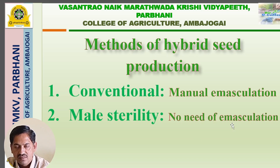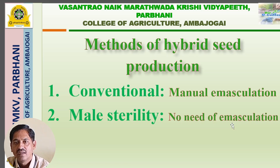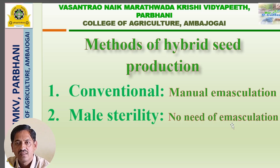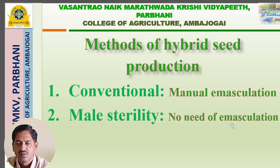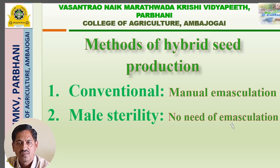Why is emasculation required? Because one line will be used as a female parent and another line will be used as a male parent. When we are using the female parent, both sexes are present together in the same flower. If we are not removing the male organ before pollination, self-pollination may occur. So male sterility is one of the mechanisms used to ensure cross-pollination.